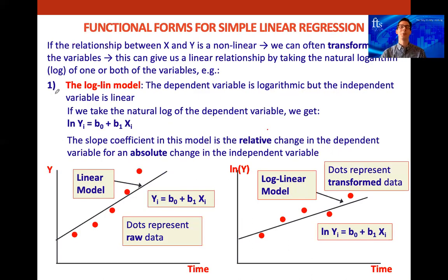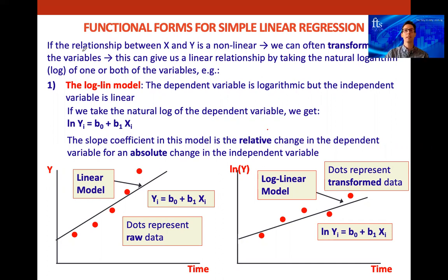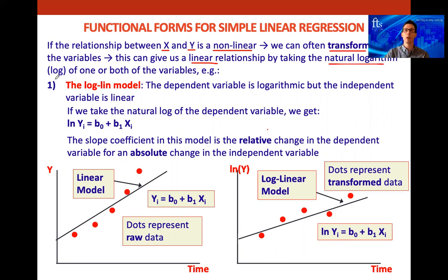Now we've got one more thing and we're done with this reading: functional forms for simple linear regression. Recall from the first class that one assumption of linear regression is that the relationship between the independent and dependent variable must be linear. But if the relationship is non-linear, we can often transform one or both variables by taking the natural log, which gives us a linear relationship. We'll look at three examples.